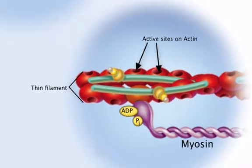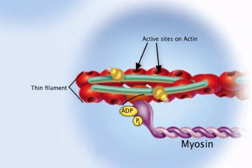Next, the cocked myosin head binds to an exposed active site on the thin filament. This forms what is referred to as a crossbridge between the myosin and the actin.